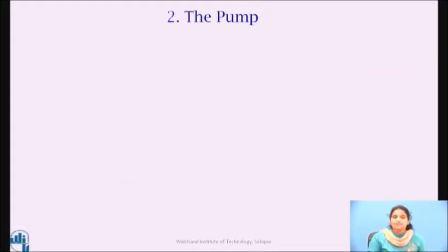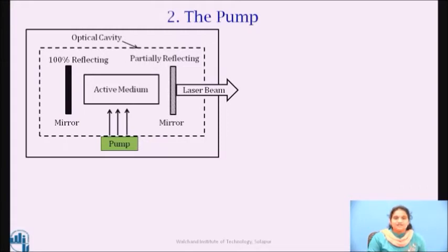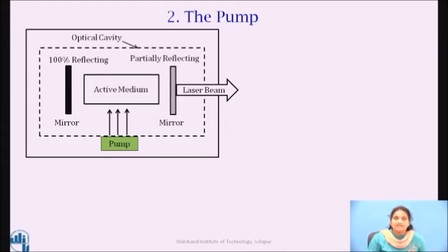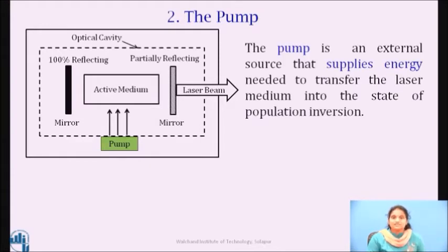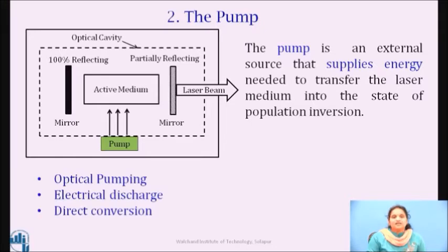The next essential component is the pump. For achieving and maintaining the condition of population inversion, we have to continuously raise the atoms in the lower energy level to the upper energy level. This requires energy to be supplied to the system. Pumping is the process of supplying energy. We can define a pump as an external source that supplies energy needed to transfer the laser medium into the state of population inversion. There are a number of techniques for pumping: optical pumping, electrical discharge, and direct conversion are some of the methods.